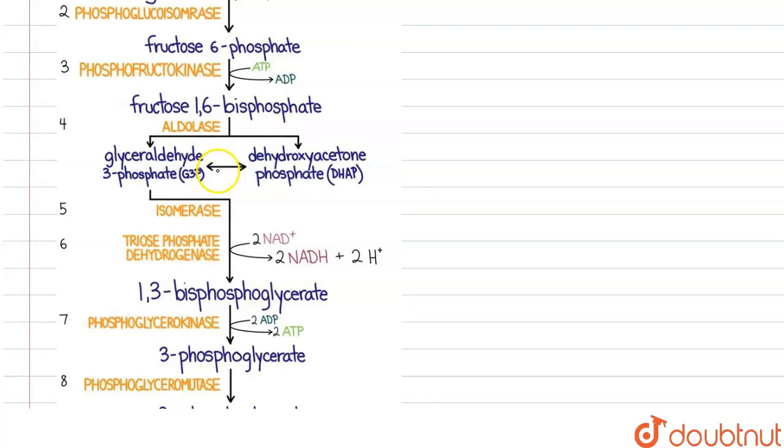After that, this bisphosphate is converted with the help of aldolase into glyceraldehyde 3-phosphate and dihydroxyacetone phosphate.